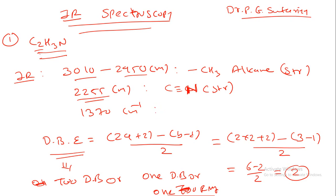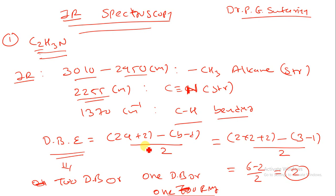In the last peak, we have 1370 cm⁻¹, which might be because of CH bending. So from the IR spectra we are getting CH3 as well as CN.